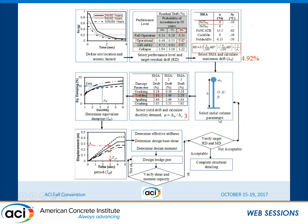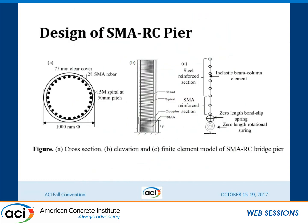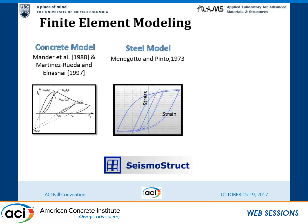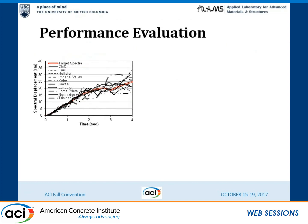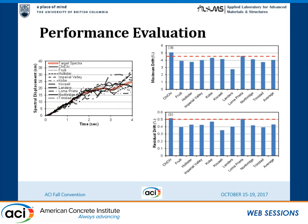Following the same procedure — finding yield drift, equivalent damping, and effective time period — the resulting design column has 28 SMA rebars and is 1 meter in diameter. The model is built in software, and 10 earthquake records matching the 2,475-year return period spectrum are used for seismic analysis. The computed maximum drift was 4.8%, which is within the target. The target residual drift was 0.6%, and most records showed residual drift less than 0.5%, satisfying the design criteria.